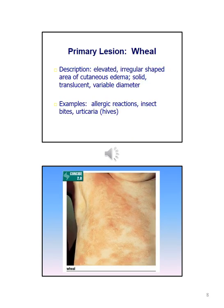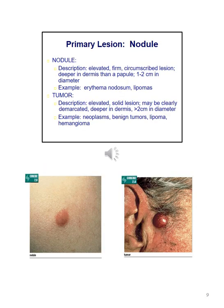A wheal is elevated and an irregular-shaped area of cutaneous edema, solid and translucent with variable diameter. Examples include allergic reactions, insect bites, and urticaria. A nodule is elevated, firm, and a circumscribed lesion deeper in the dermis than a papule, usually about one to two centimeters in diameter. Examples include erythema nodosum and lipomas.